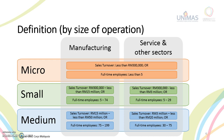In the manufacturing sector, a business is considered as a small business when it has sales turnover between 300,000 ringgit to less than 15 million ringgit, or has full-time employees between 5 to 74 workers, whichever is lower. A medium-sized business in the manufacturing sector has sales turnover between 15 million ringgit to less than 50 million ringgit.